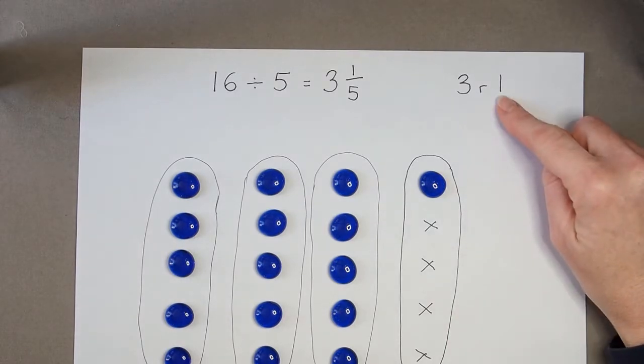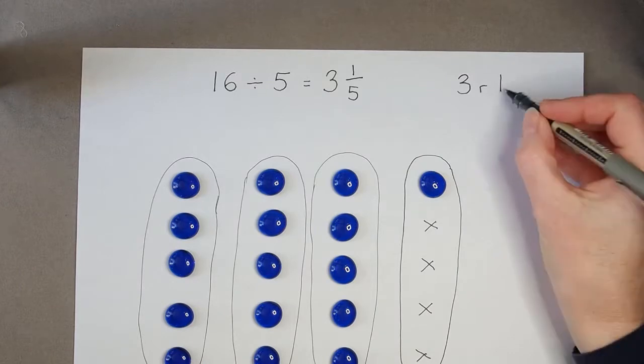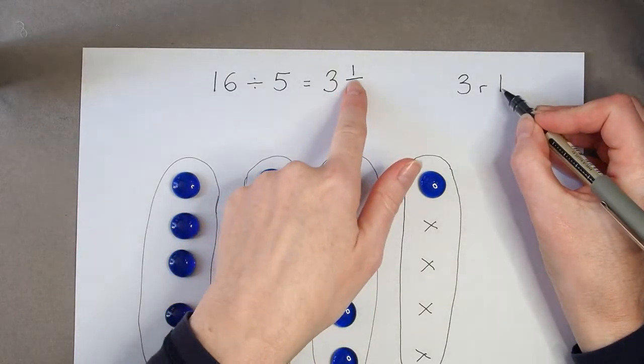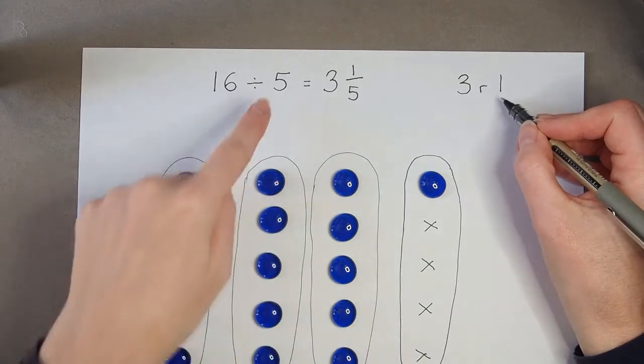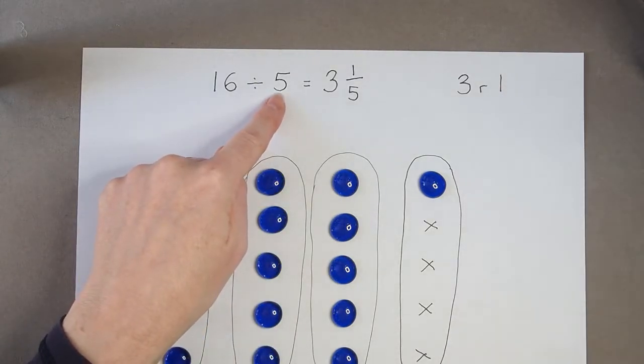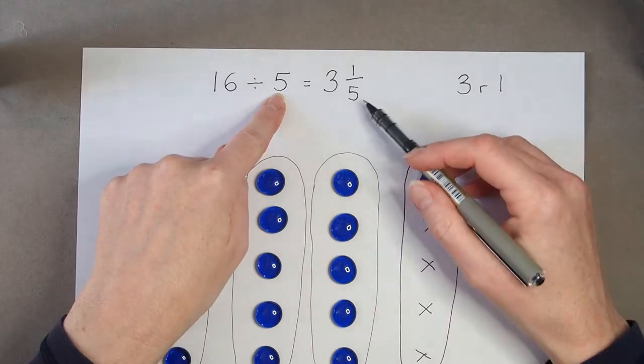So with remainder 1 here I can see that is going to be the numerator of my fraction because I've got 1 counter left and the denominator is how many I needed in each group. Here it's 5.